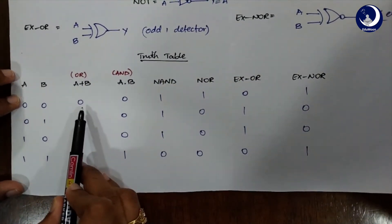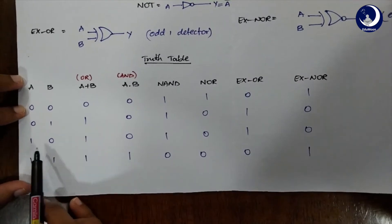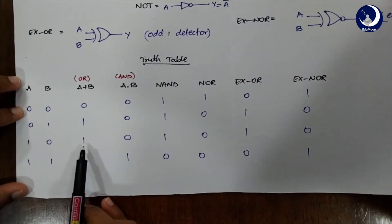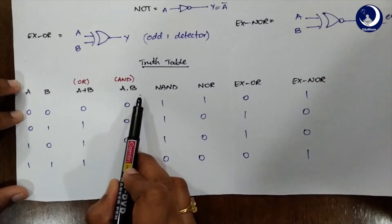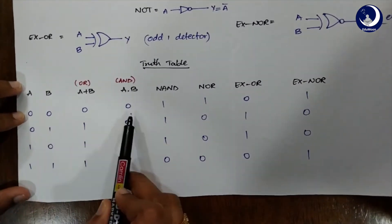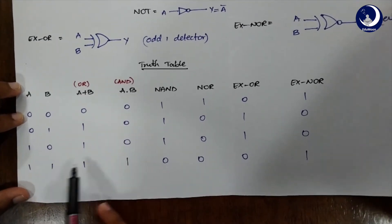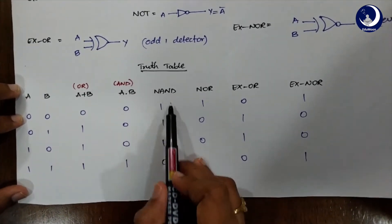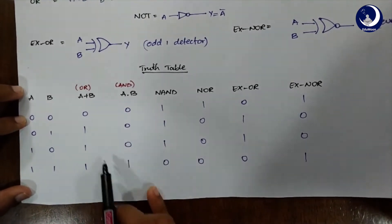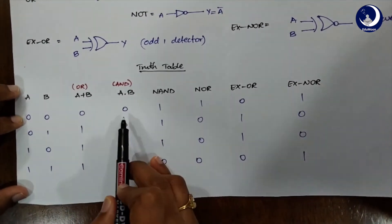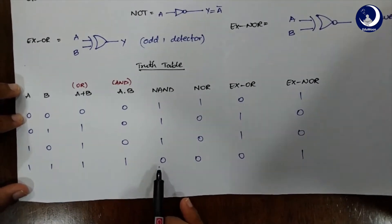So A plus B, as we all know: 0+0=0, 1+0=1, 0+1=1, 1+1=1. Now AND, A dot B: 0·0=0, 0·1=0, 1·0=0, 1·1=1. NAND is basically the NOT of this AND gate. So just complementing all these values: for 0 it's 1, 0 it's 1, 0 it's 1, and for 1 it is 0.